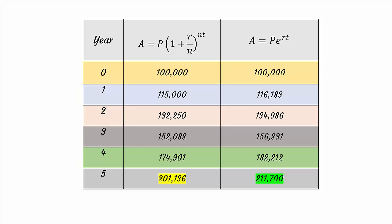Well, the formula in the left column is calculating discrete compounded interest. The formula in the right column is calculating continuous compounded interest.